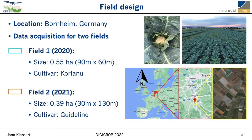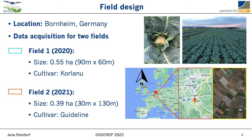Our fields are located in Bornheim, in the west of Germany. We acquired data for two fields, one in 2020 and one in 2021, with slightly different sizes and different cultivars. The data acquisition took place during the whole growing period. We collected three different sources of data.